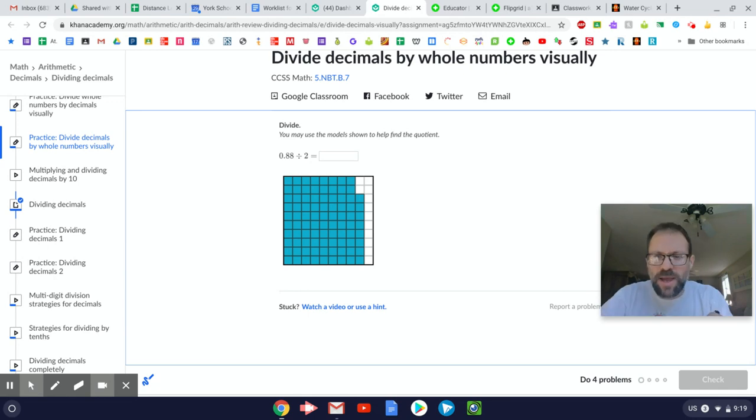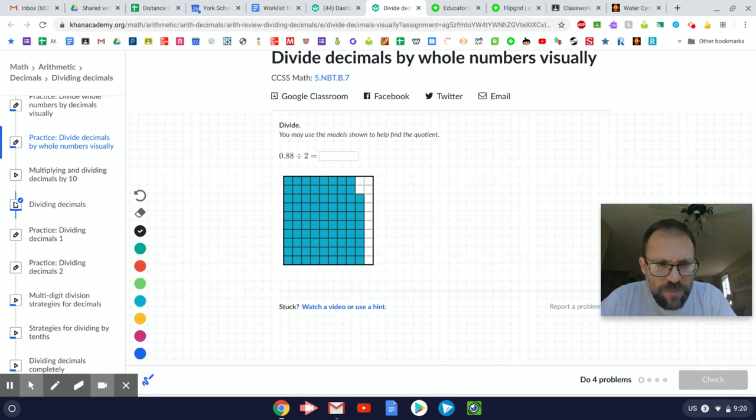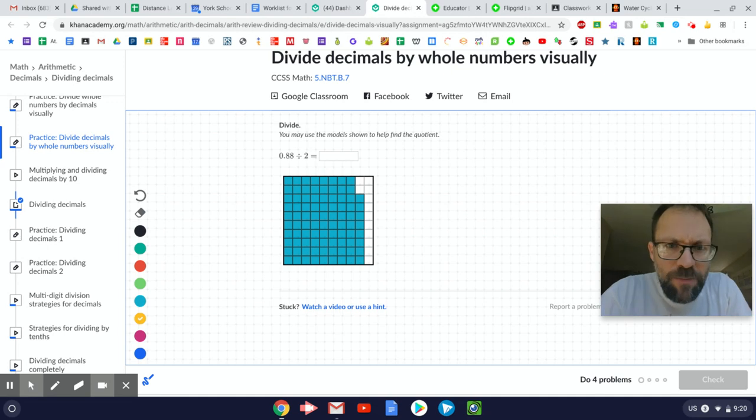So one way I could do that is, let's see here. One way I could do that is I could first take all the whole columns, all the whole tenths, and divide those up into two equal groups.